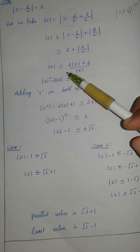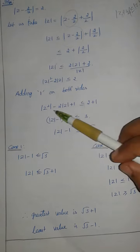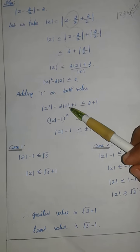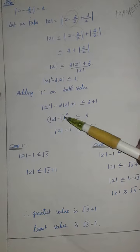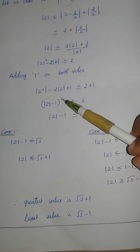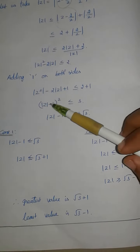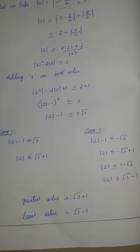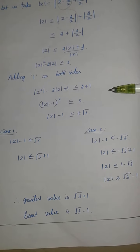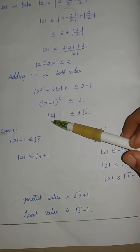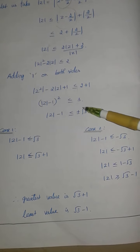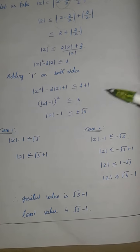Adding 1 on both sides. We use the A squared plus B squared minus 2AB format, which gives a result equal to 3. This simplifies to modulus of Z minus 1, whole squared, which is the A minus B whole square form. Taking square root on both sides.